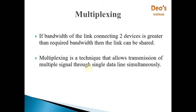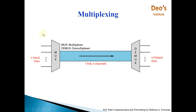Now we will see how this happens. In multiplexing, on the sender side, consider there are N input lines, meaning N different signals. These N different signals will be given to a multiplexer, which will combine them and form one signal. That signal will pass through this channel — a physical link which has greater bandwidth than the combined bandwidth required. For example, if there are 3 signals each requiring 4 kHz bandwidth, then the combined signal will require 12 kHz.